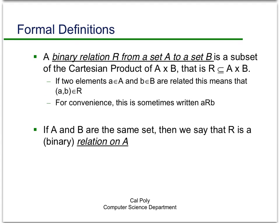Most of the relations we'll be talking about are called binary relations — in other words, there are two sets involved, which may be the same or different. A binary relation from a set A to a set B is a subset of the Cartesian product A cross B. Notice the order is important. The relation is a subset of A cross B, and we say two elements a and b are related — meaning the ordered pair (a, b) is in the relation R. We often just write 'a R b' where R stands for the relation, meaning a is related to b.